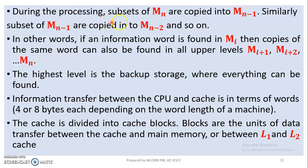During processing, a subset of Mn is copied into Mn-1. Similarly, a subset of Mn-1 is copied into Mn-2, and so on. So data is copied from Mn-1 into the main memory, then from the main memory into the cache memory, and ultimately from the cache memory up from the hard disk through successive levels.